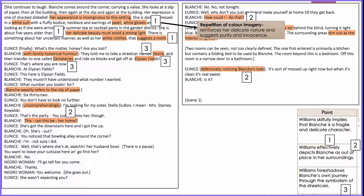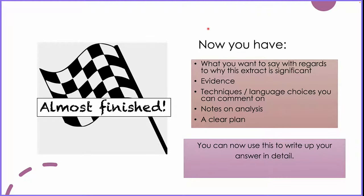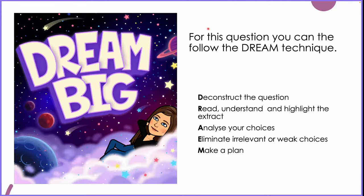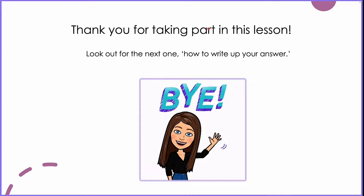This is an example of what it would look like — you would continue and add notes for every single quotation as quickly as you can, then start to write up your essay. Now we have what we want to say about the extract, why it's significant, how it links to the question, a range of evidence, and notes on techniques and language choices. You can follow the DREAM technique: Deconstruct the question, Read and understand the extract, highlight it, Analyse your choices, Eliminate irrelevant or weak choices, and Make a plan. Thank you for taking part in this lesson — look out for the next one, which uses the plan we've made today to write up the answer.